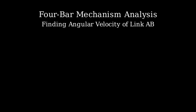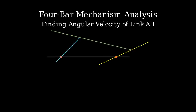Let's analyze a four-bar mechanism to find the angular velocity of link AB. Here's a diagram showing the mechanism. Link AD is the fixed ground link. We have three moving links: AB, BC, and CD.